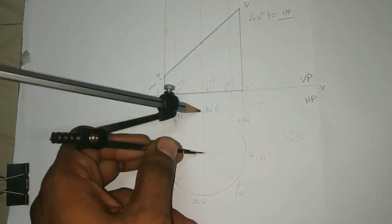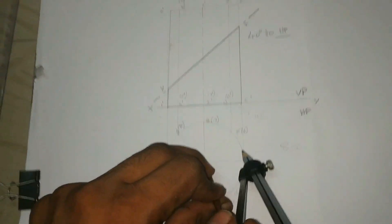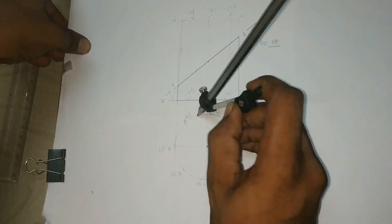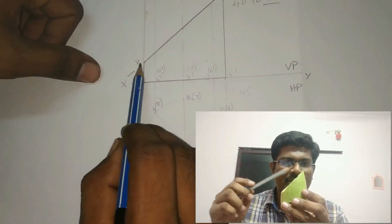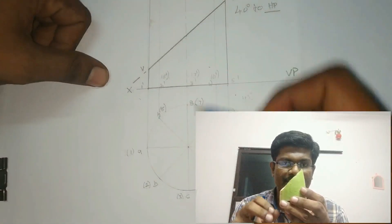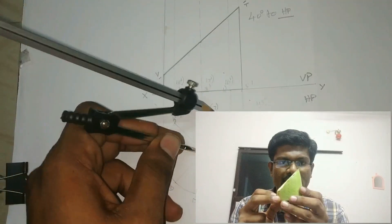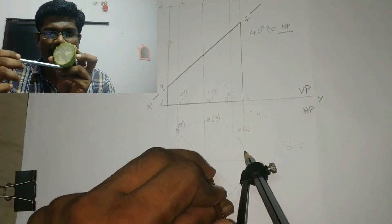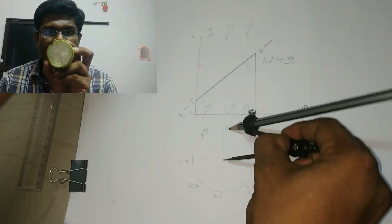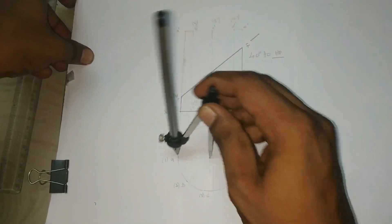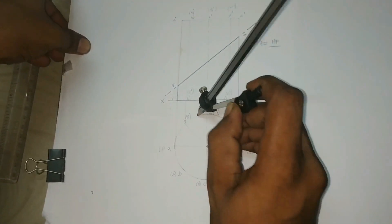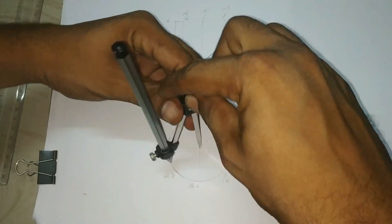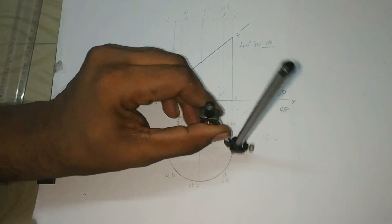Now darken the outer boundary of the cylinder. In a cylinder we are not having any vertical edges or slant edges, so don't darken the imaginary generating lines. After cutting in step 2, now project the new cutting points to the top view with help of 2H pencil and locate those points. In this particular problem the top base is completely removed, so definitely the outer boundary of the solid will be visible. Now darken the outer boundary in step 1 using HB pencil and draw the circle.